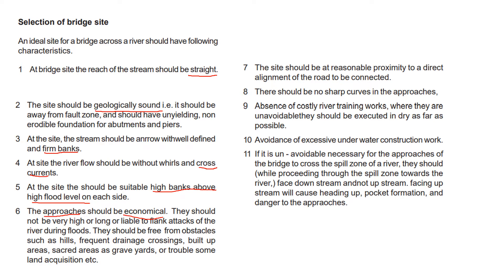Next is how to connect the bridge. The site should be reasonable in proximity and in direct alignment with the road to be connected. We need to avoid sharp curves in approaches. We need to use river training work and appropriate transport means.